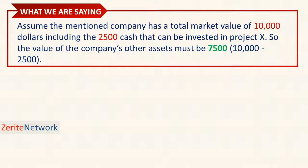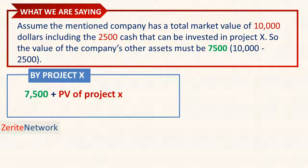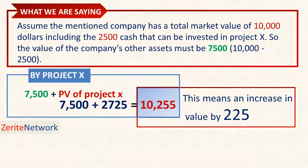Assume the mentioned company has a total market value of $10,000, including $2,500 that can be invested in Project X. The value of the company's other assets must be $7,500 — that is $10,000 minus $2,500. If they decide to invest the $2,500, the total market value of the company will be $7,500 plus the PV of Project X, that is $7,500 plus $2,725, which gives $10,255. This means an increase in value of $225; otherwise the market value will remain at $10,000 if Project X were rejected.